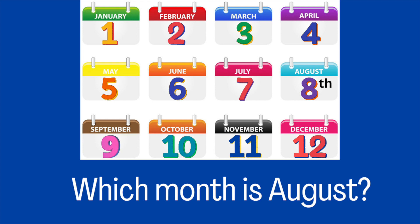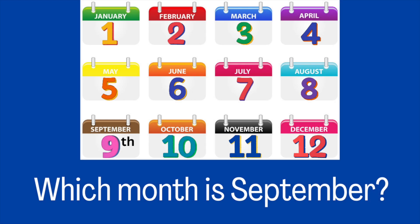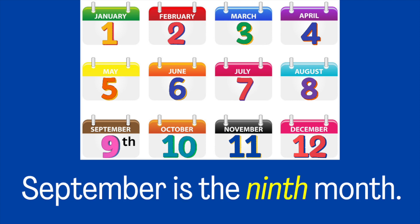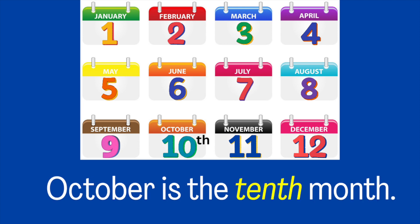Which month is August? August is the eighth month. Which month is September? September is the ninth month. Which month is October? October is the tenth month.